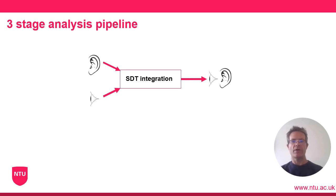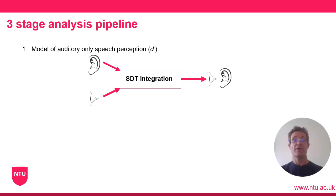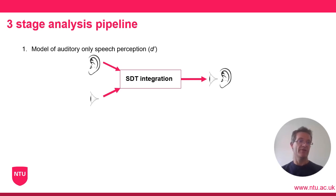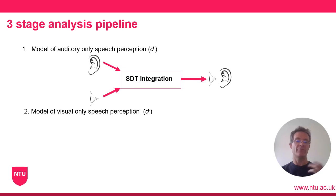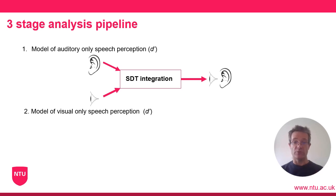To apply our approach to these data we have a three-stage pipeline. First, we fit a model of the auditory-only speech perception data for all participants. Second, we build a similar model of the visual-only speech perception. We then put these through our signal detection model of audiovisual integration, and if it's a good model we hope it can predict audiovisual performance.